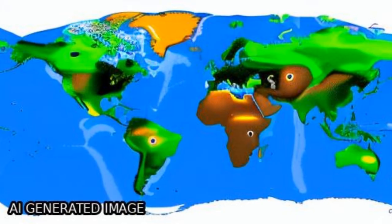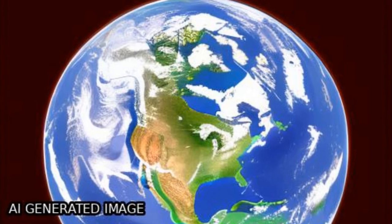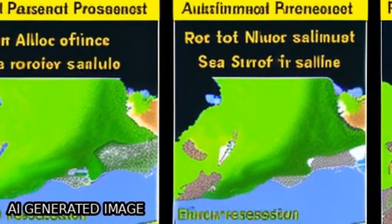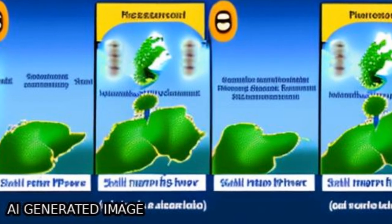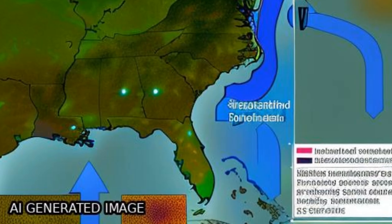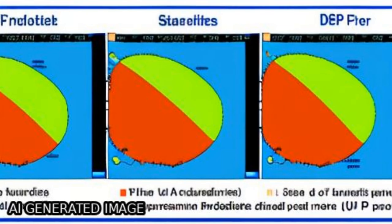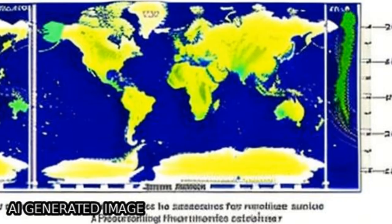The results show that all models improved the SMAP SSS product by up to 28% reduction in root mean square error for validation, with random forest yielding better performance than the other two methods. The calibration and validation RMSEs by random forest were 0.203 and 0.556 practical salinity unit (PSU), while those of SMAP SSS were 0.774 PSU.